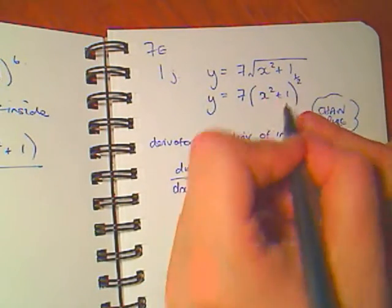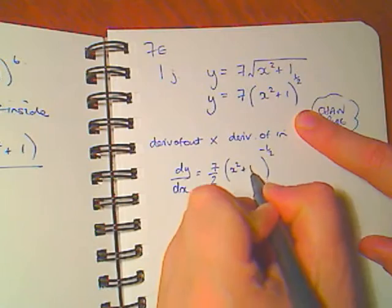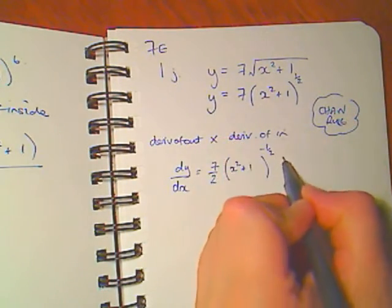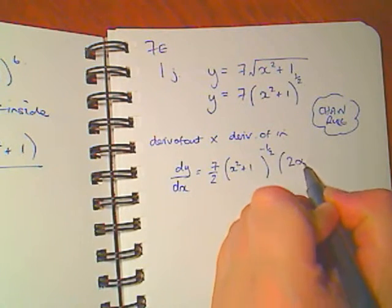That's just using the power rule. I'll write in what I had in the brackets. That's the derivative of the outside. The derivative of the inside is just the derivative of this inside piece which is just 2x.